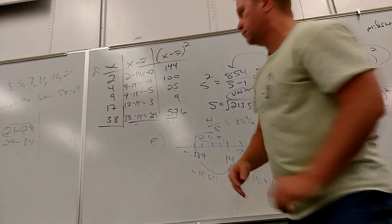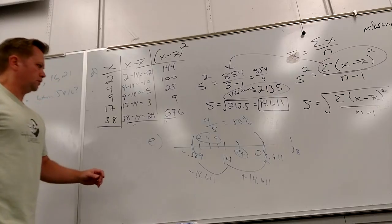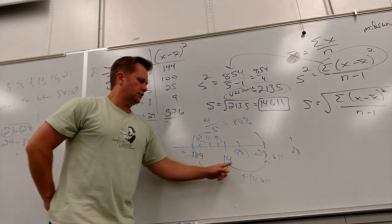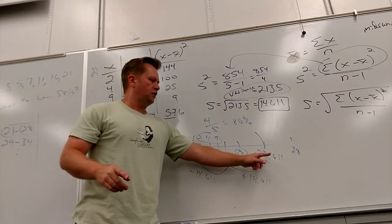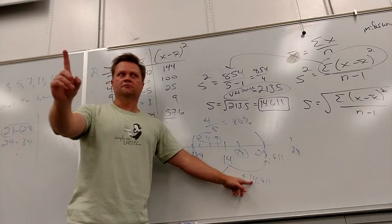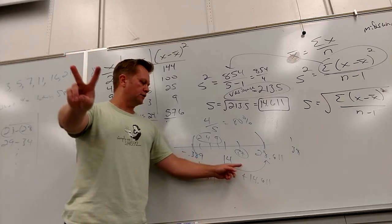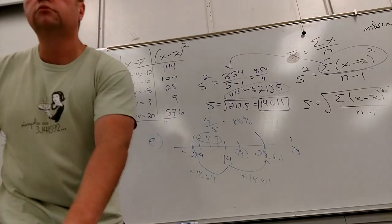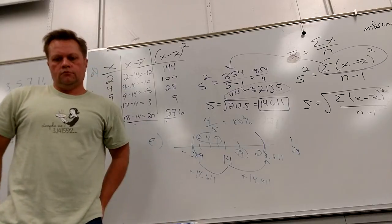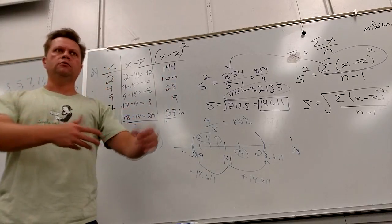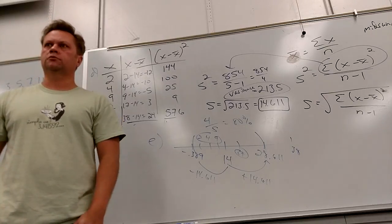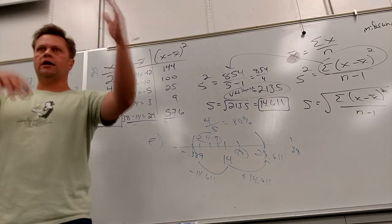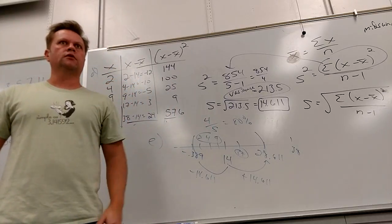May I ask a seemingly silly question: how did I get 28.611? I added the mean plus the standard deviation. So how many standard deviations above the mean is that? One. If I wanted to go two steps above the mean, I would say 14 plus 2 times the standard deviation. Number two on the practice test is asking about going down so many standard deviations or going up so many standard deviations.